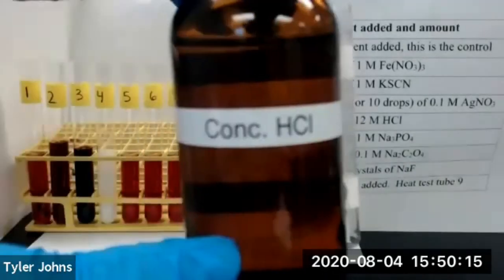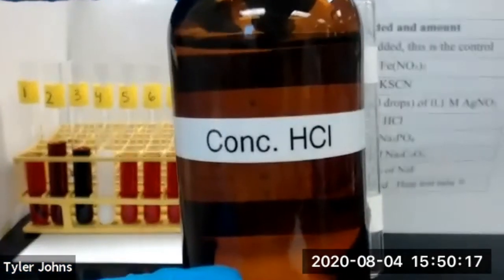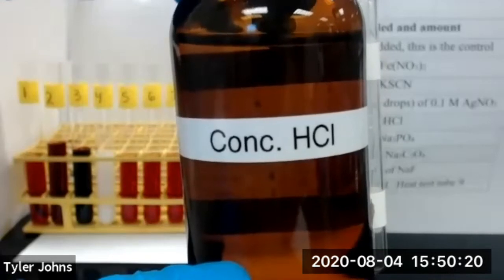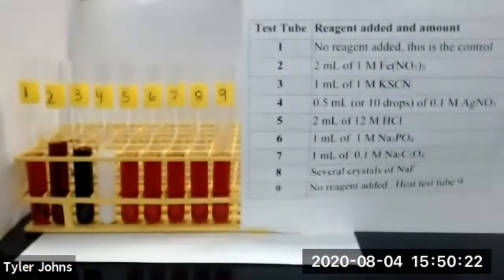We'll now add two milliliters of 12 molar hydrochloric acid or concentrated hydrochloric acid to test tube number five.